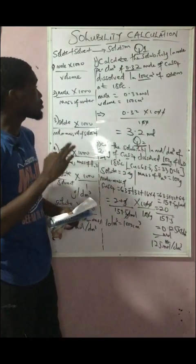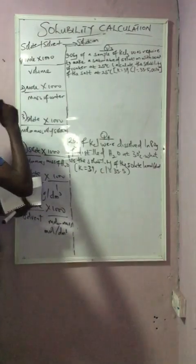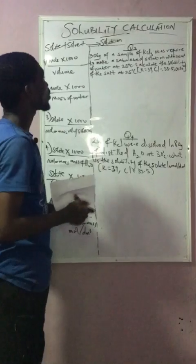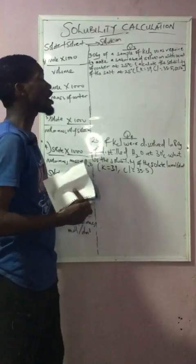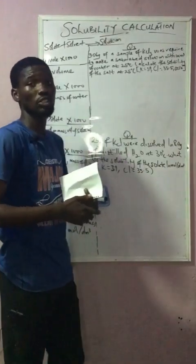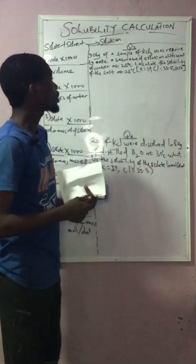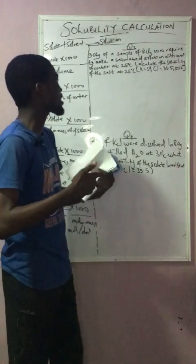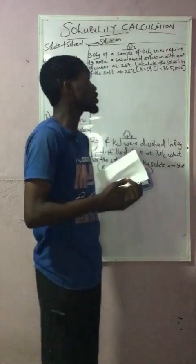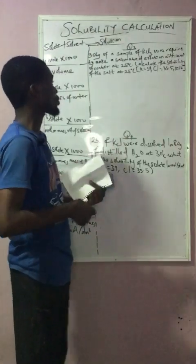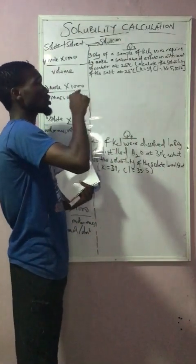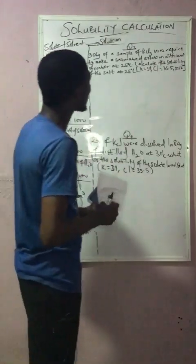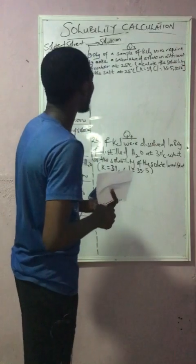Let's look at the third question. 3.06 grams of a sample of potassium chlorate (KClO₅ — for those who don't know how to calculate oxidation number, check my other video) was required to make a saturated solution with 10 cm³ of water at 25 degrees Celsius. We have to calculate the solubility of the salt, because potassium chlorate is a salt.